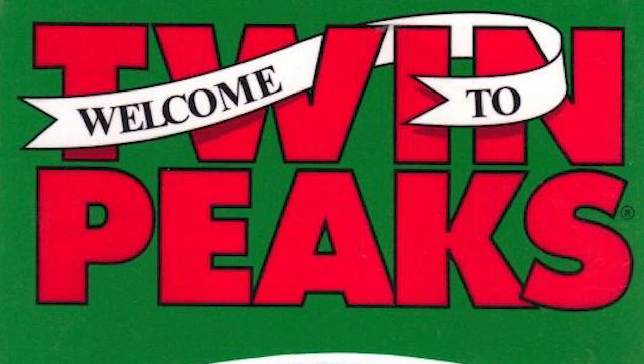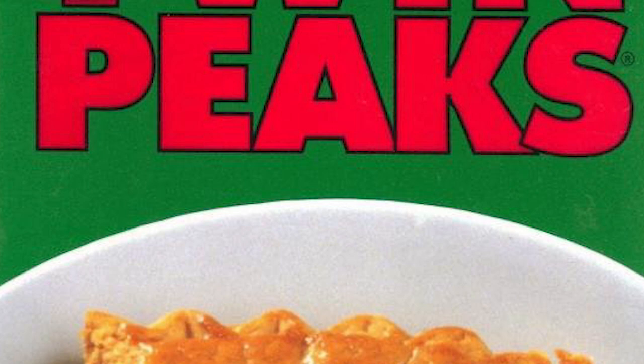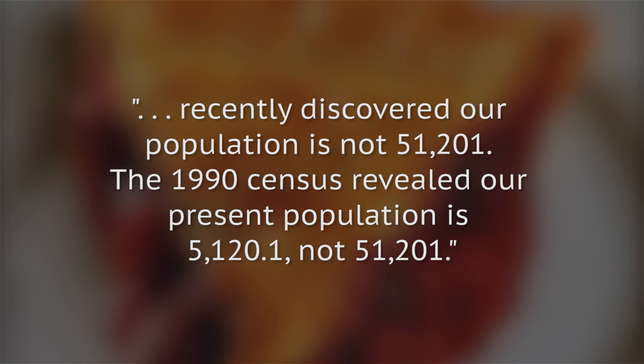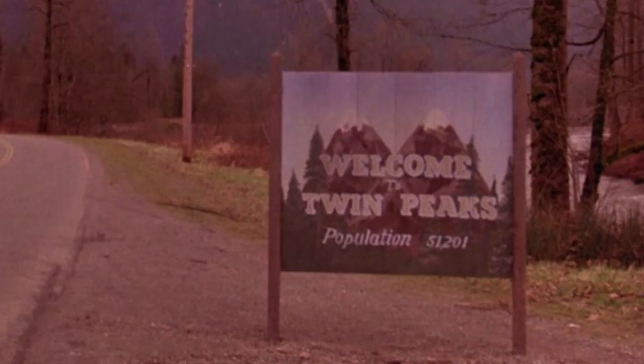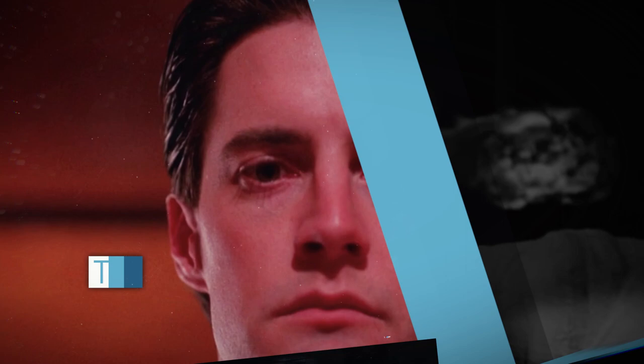Later, Lynch and Frost got around ABC's order to change the population. In the 1991 tie-in book Twin Peaks Access Guide to the Town, they wrote that Twin Peaks recently discovered its population is not 51,201 — the 1990 census revealed the present population is 5,120.1, not 51,201.